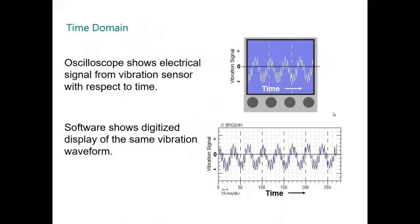The time domain is called the waveform. The waveform is how the machine is vibrating. On the top is using the analog oscilloscope. On the bottom, using a digitized display of the same vibration waveform. You can observe that all the signals are the same. That means the digitization process is very accurate in this case.